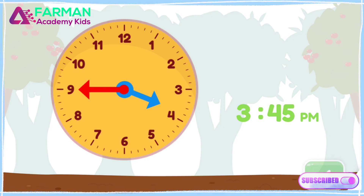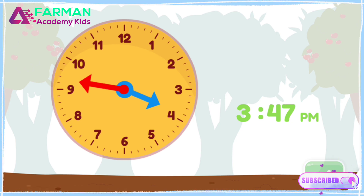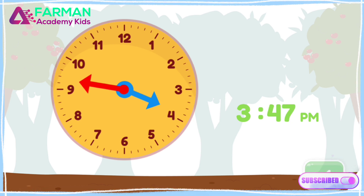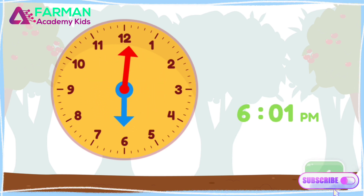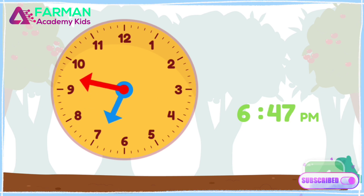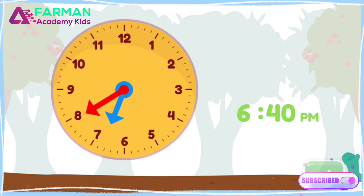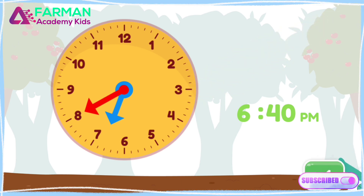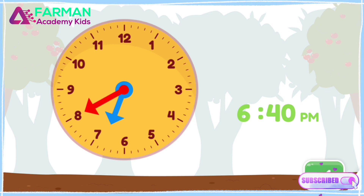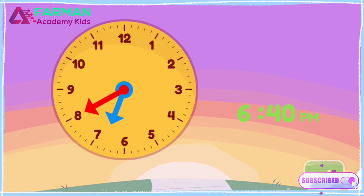Now move the minute hand on the round clock to show 6:40 p.m. You made the clock show 6:40 p.m. This is when we have dinner in the evening.